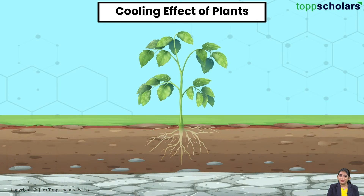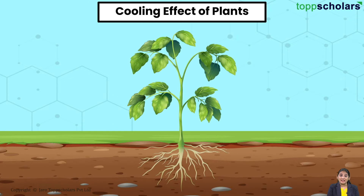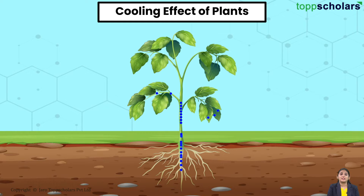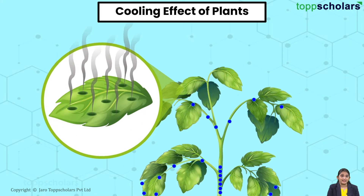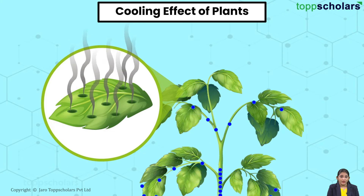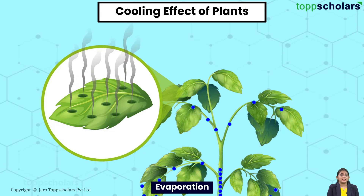As we know, plants absorb water from their roots, which travel and reach all the parts of the plant body. After reaching the topmost part of the tree, that is the leaf, it starts evaporating.